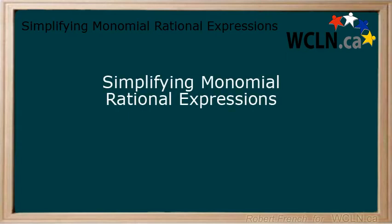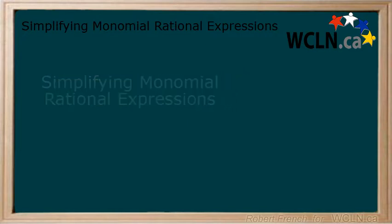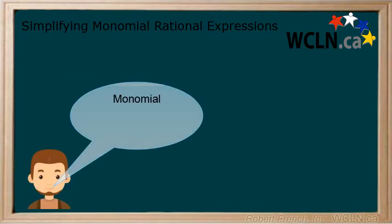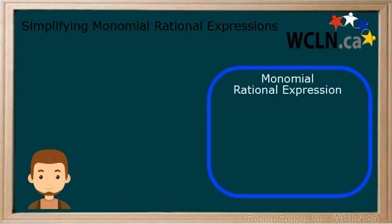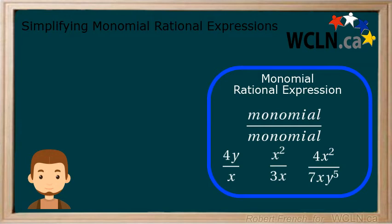In this tutorial, we will be looking at how to simplify monomial rational expressions. Remember, a monomial is a polynomial with one term, like 3x squared or xy cubed. Therefore, a monomial rational expression has a monomial in both the numerator and denominator. All of these are examples of monomial rational expressions.